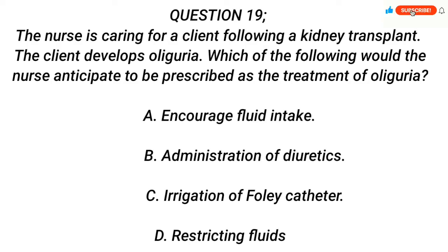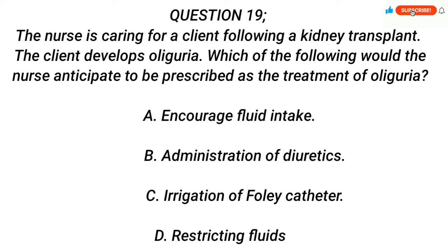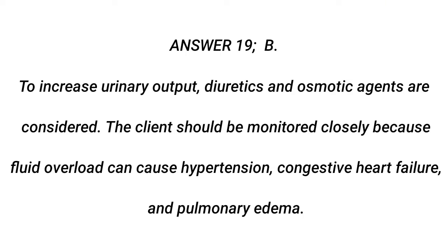Question 19. The nurse is caring for a client following a kidney transplant. The client develops oliguria. Which of the following would the nurse anticipate to be prescribed as the treatment of oliguria? A. Encourage fluid intake. B. Administration of diuretics. C. Irrigation of Foley catheter. D. Restricting fluids. Answer 19: B. To increase urinary output, diuretics and osmotic agents are considered. The client should be monitored closely because fluid overload can cause hypertension, congestive heart failure, and pulmonary edema.